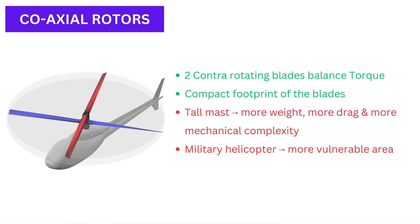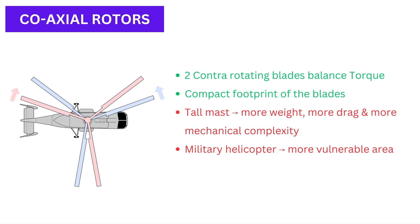Contrarotating coaxial rotors: this type has one rotor positioned above the other on a concentric shaft. This automatically balances the torque reaction on the airframe and does not require additional methods to balance the torque, as in the previous configuration.